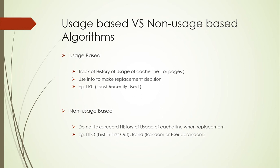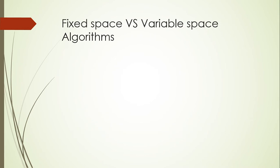Examples of non-uses-based algorithms are First-In-First-Out (FIFO) and random replacement. For fixed-based versus variable-space algorithms: in fixed-based, the cache size is assumed to be fixed, and it is involved in the selection of cache lines. It does not involve complex processes in its implementation.